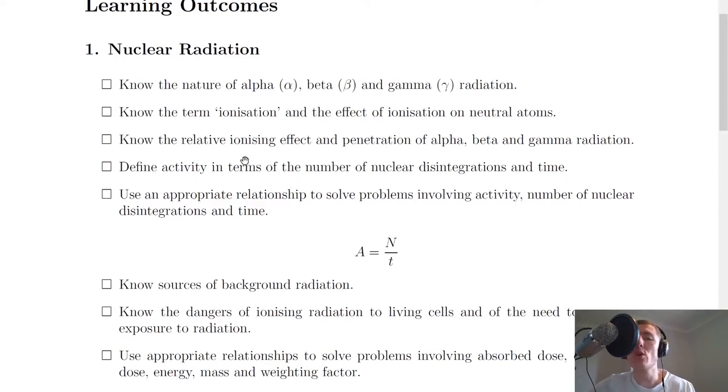It then says to know the relative ionizing effect and penetration of alpha, beta and gamma radiation. Remember we summarized this in the table during the video where we looked at ionization and penetration. Alpha radiation was the most ionizing but the least penetrating. Gamma radiation was the least ionizing and the most penetrating and beta was in the middle for both.